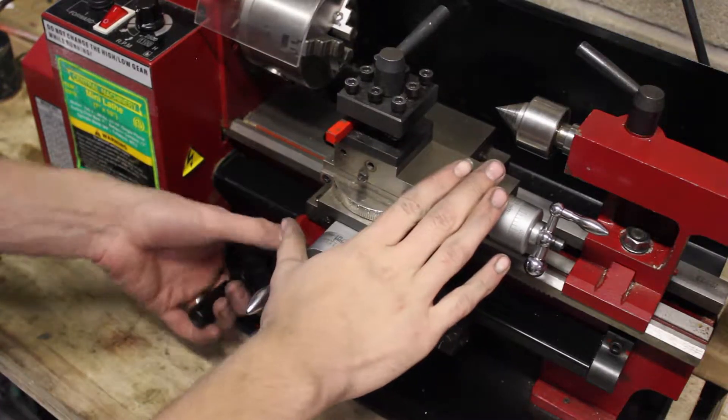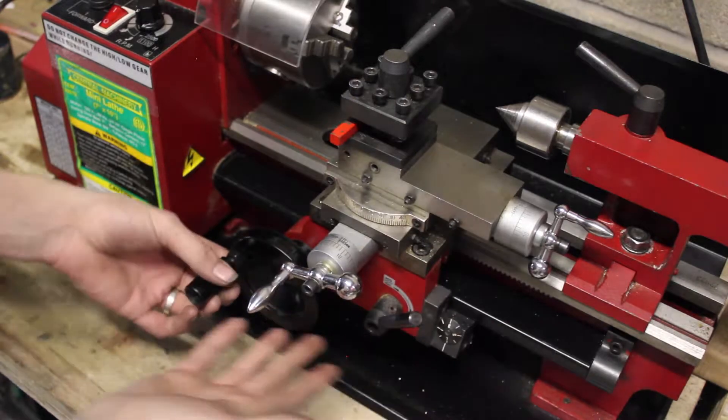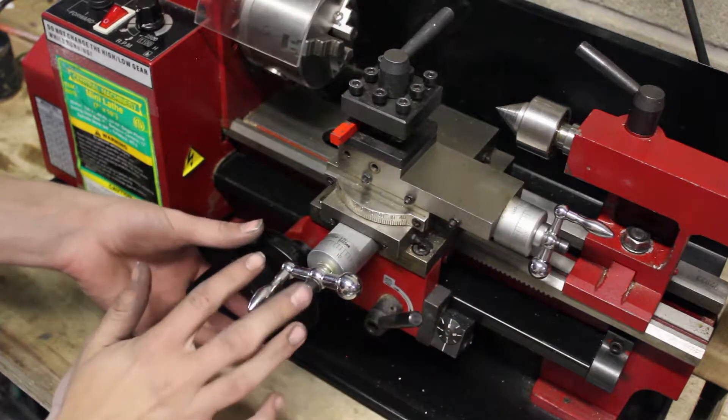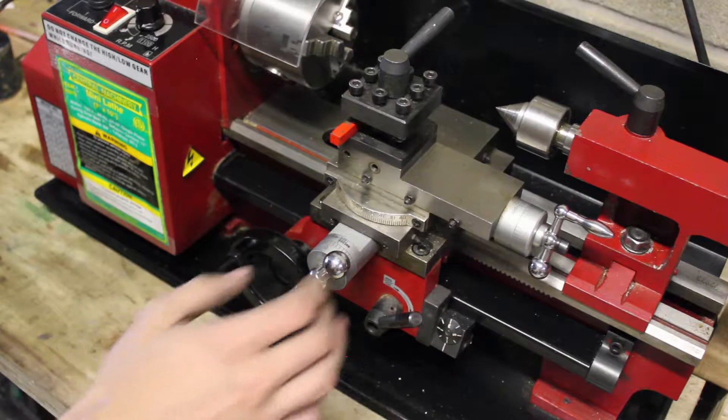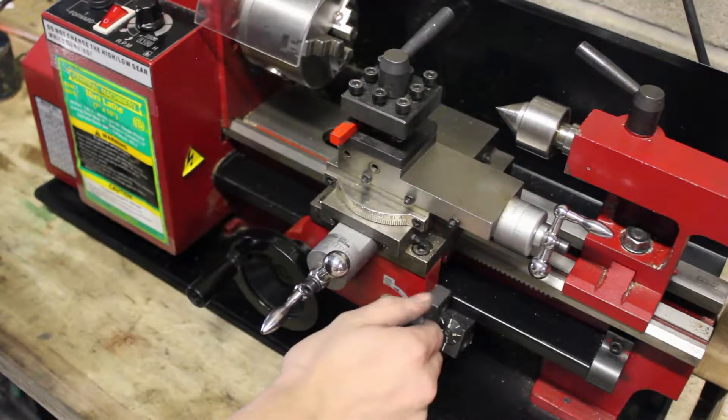Now this center assembly here, this is the carriage. This is the part that has all the knobs.